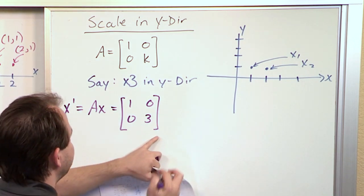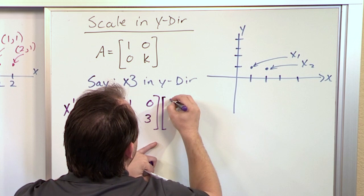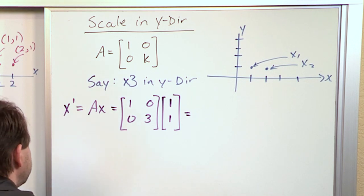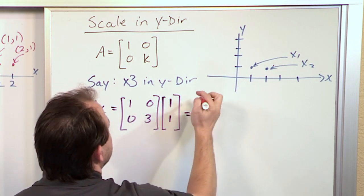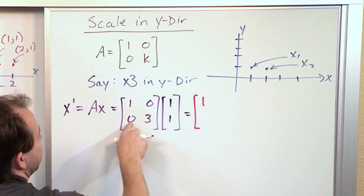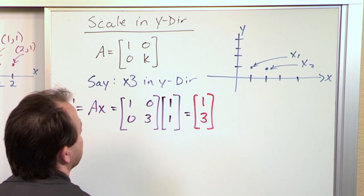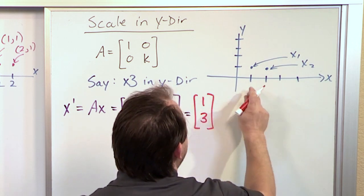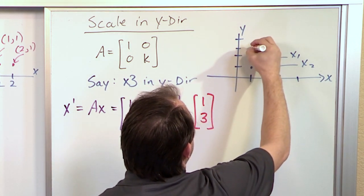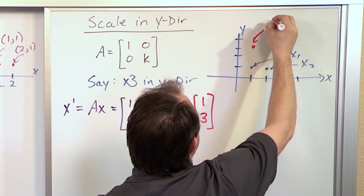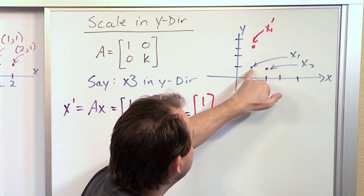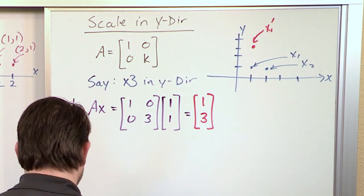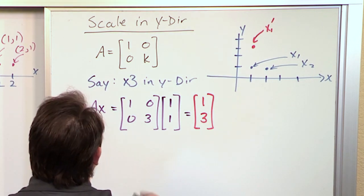We have to multiply by the original point. One of the original points is (1,1). Doing the multiplication: 1 times 1 is 1, plus 0 times 1 is 0 — we get 1 up top. Then 0 times 1 is 0, plus 3 times 1 is 3. So we get the new point (1,3). We've taken the x1 point and stretched it only in the y direction times 3. The transformation matrix is doing its job — scaling only in the y direction.